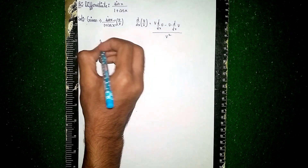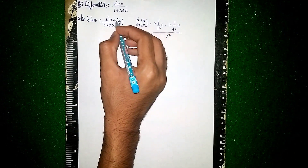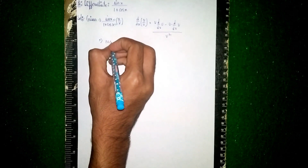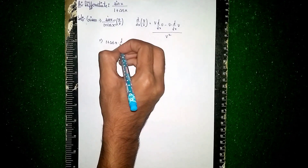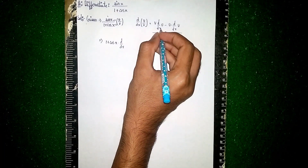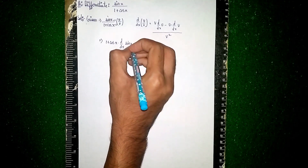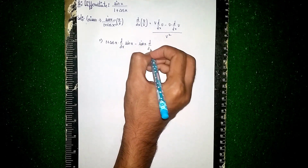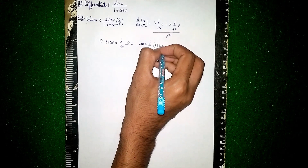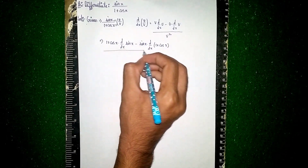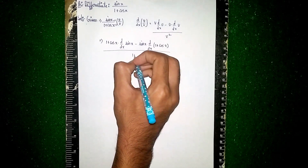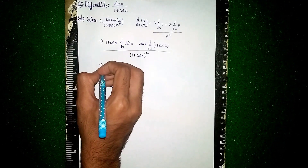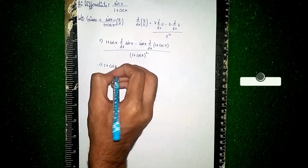This is the formula we are using. Now substitute the values: u is sin(x) and v is (1 + cos(x)). So we get: (1 + cos(x)) · d/dx(sin(x)) minus sin(x) · d/dx(1 + cos(x)), divided by (1 + cos(x))².